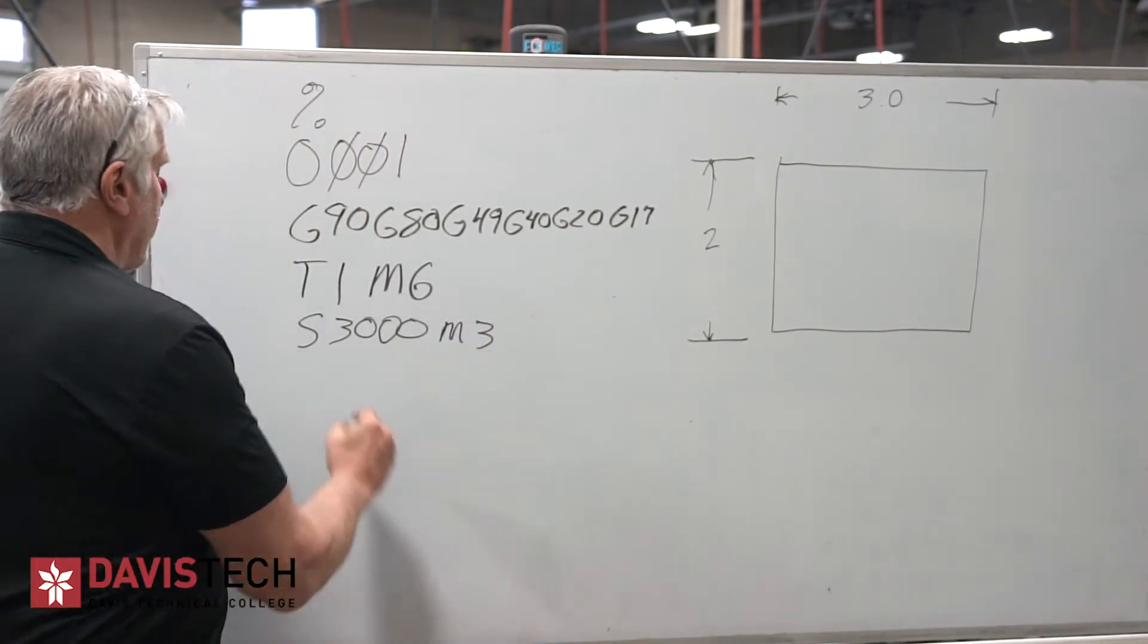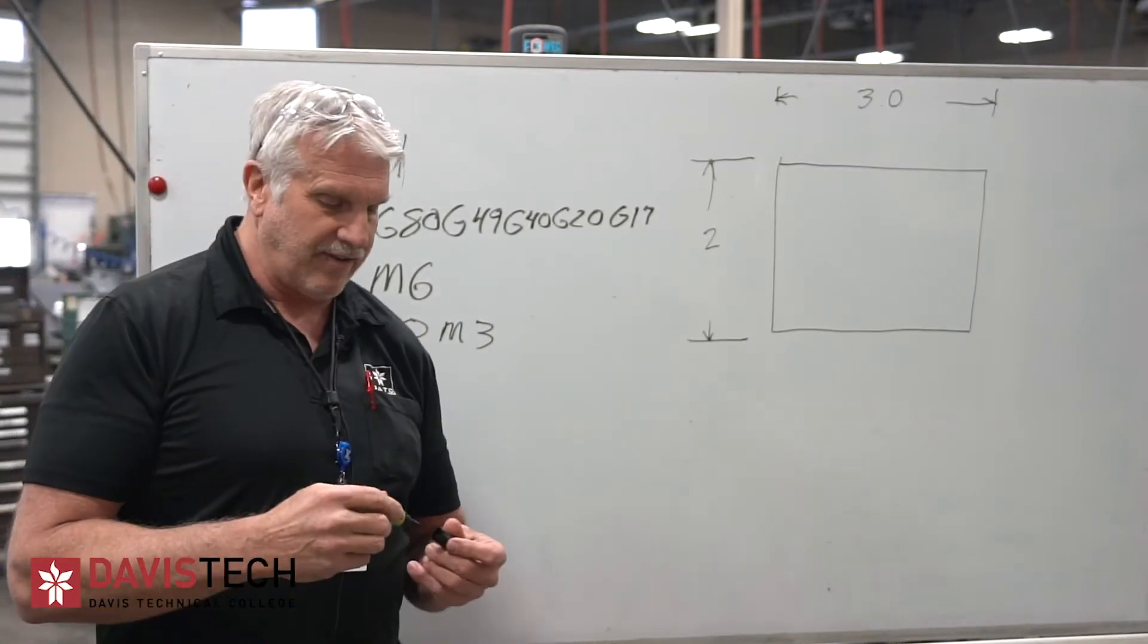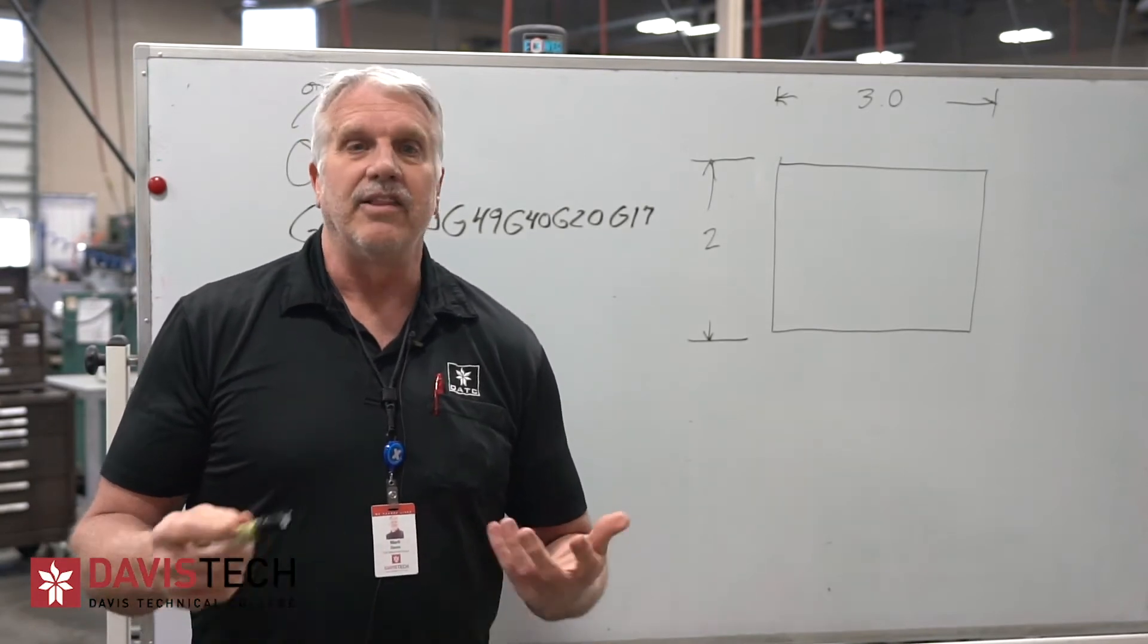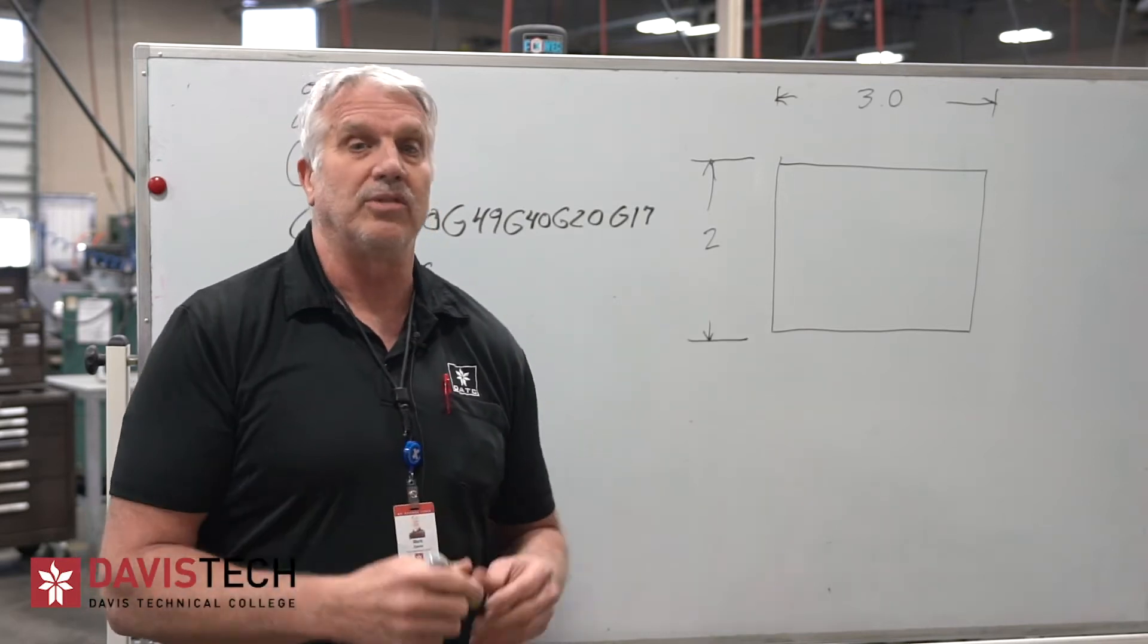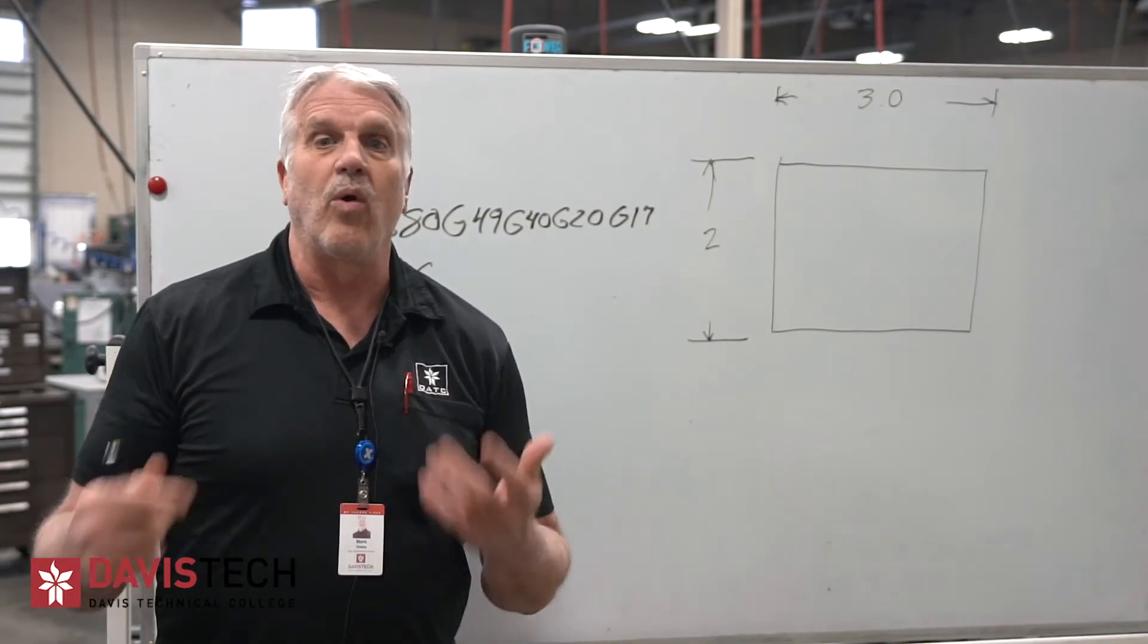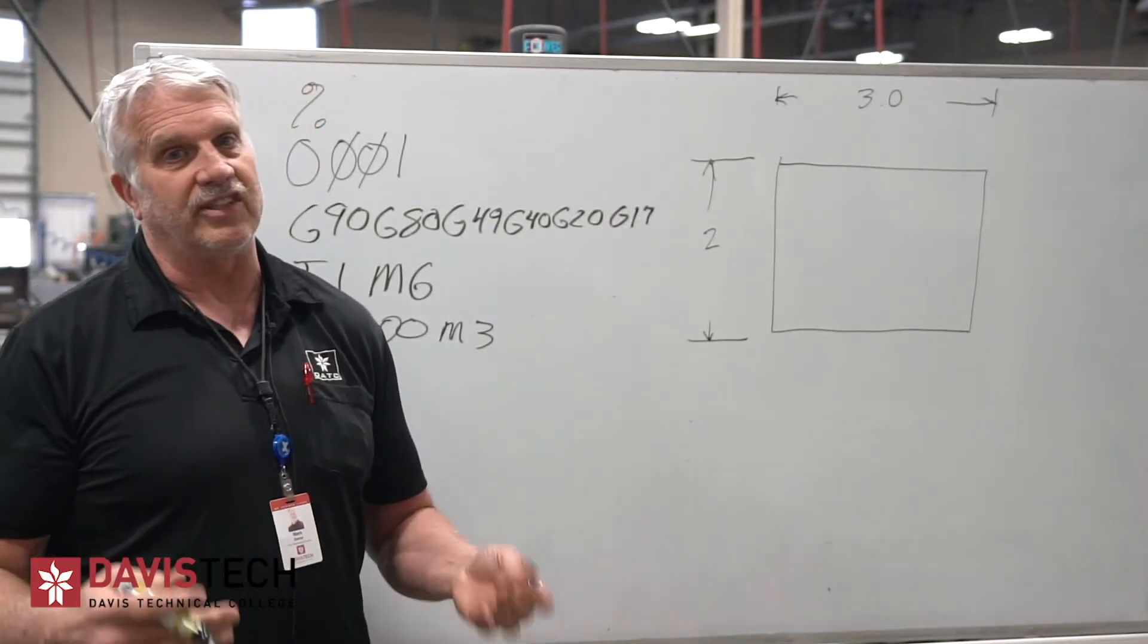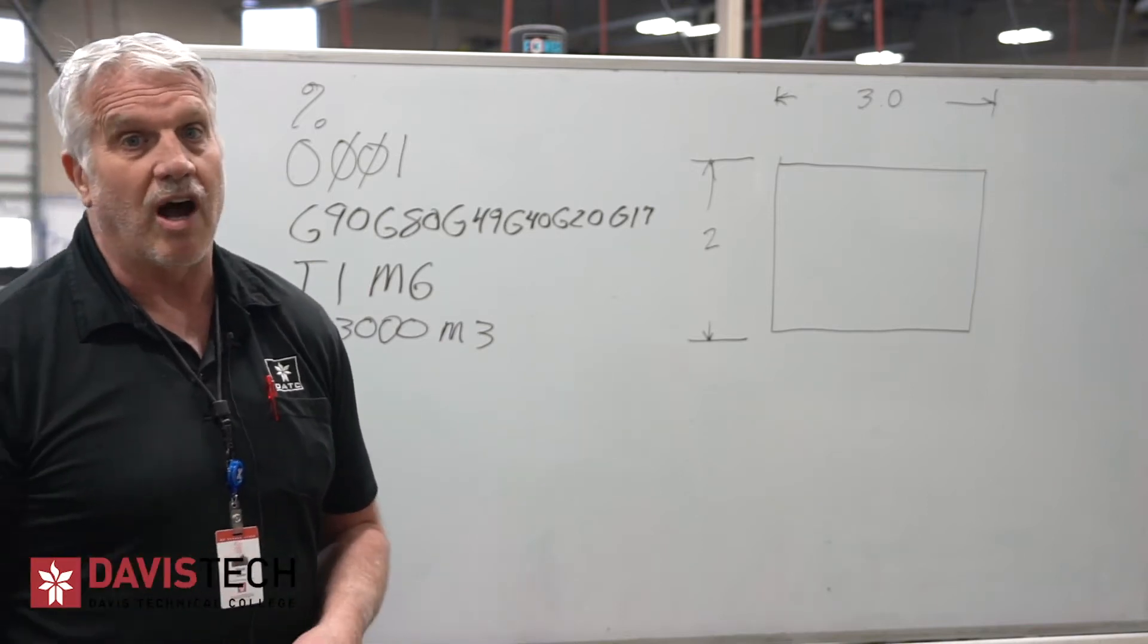Next thing I want to do is I want to call up my work coordinate system. Now work coordinate system, it's like a house number. Like if I go to my friend's house, he gives me his address. This is the address. So now I know where to start and where to go to. And on CNC machines, you have a home position and you have a work position. That work position, we usually call that G54. There's G54, 55, 56, 57, 58, 59. And then there's a bunch of other ones, but those are the most common ones.